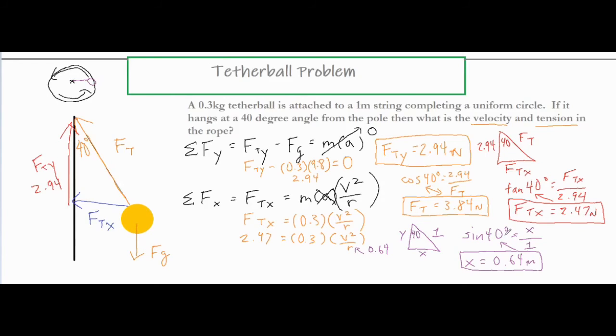I have sine of 40 equals x over one. Sine is opposite. The opposite end is the x component over the hypotenuse of one. If you cross multiply the one over sine of 40, it's still going to be the sine of 40, which comes out to 0.64. The length, the horizontal length is going to be 0.64 meters. That is our radius.